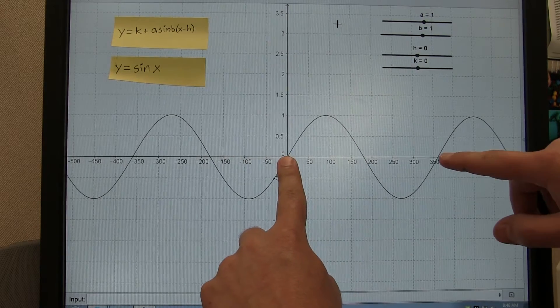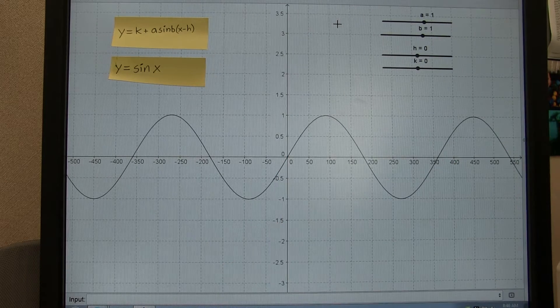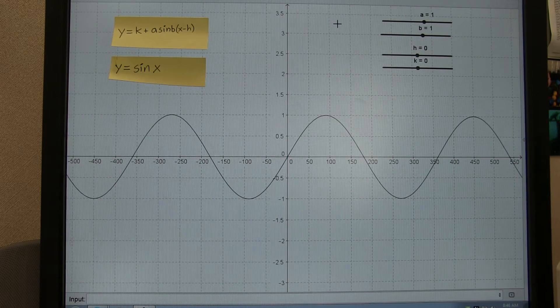The length from here to here is called a period, because we see one complete cycle. Right now the period is 360 degrees.